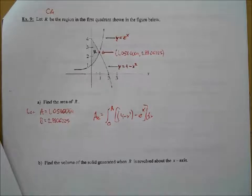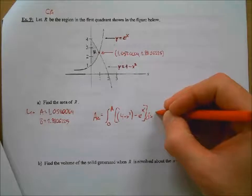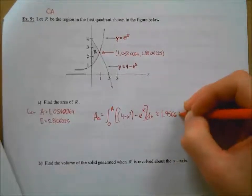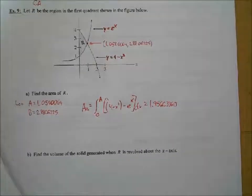Did you get an answer for that when you typed in your calculator? I got 1.956633613. Okay, 9, 5, 6, 6, 3, 3, 6, 1, 3. Something like that.